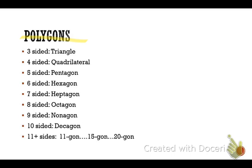Five-sided? Pentagon. Six-sided? Hexagon. Seven-sided? Heptagon. Eight-sided? Octagon. Nine-sided? Nonagon. And ten-sided? Decagon. Beyond that, 11 and up, we just use the first number and then 'gon.' So however many sides it is, you will see the word 'gon.' So those are our different polygons.